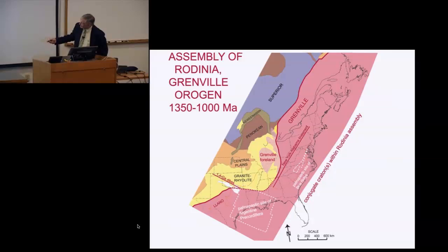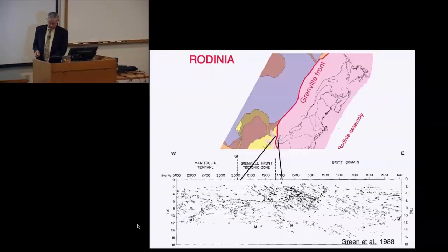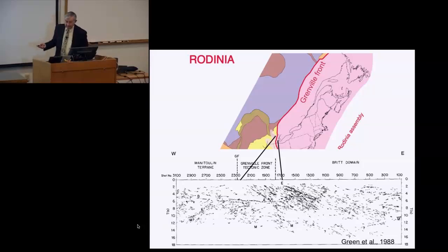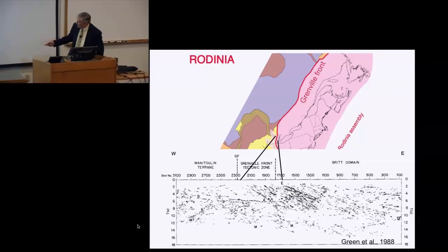One way of looking at the Grenville front: it's the edge of all the material being pressed up against the even older continent shown in various colors. Here is a seismic reflection profile across the Grenville front in Lake Huron, done by sending sound waves down into the earth and recording travel times. This represents the surface, and this is a cut down into the earth. I want to call attention to these layered reflectors indicating a layered fabric extending all the way down to the base of the crust.